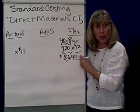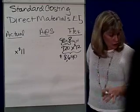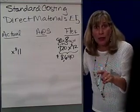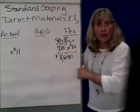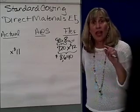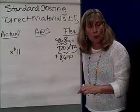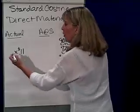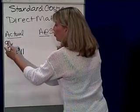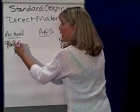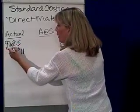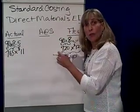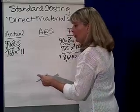So that's the flexible budget. Now, what did we actually do? The production department this period didn't use eight square yards — instead it used, on average, 8.5 square yards. When I look at actual, we produced 90 elevators and each one had 8.5 square yards. So how many yards did we actually use? 765 yards — and what did they actually pay? $11 a yard.